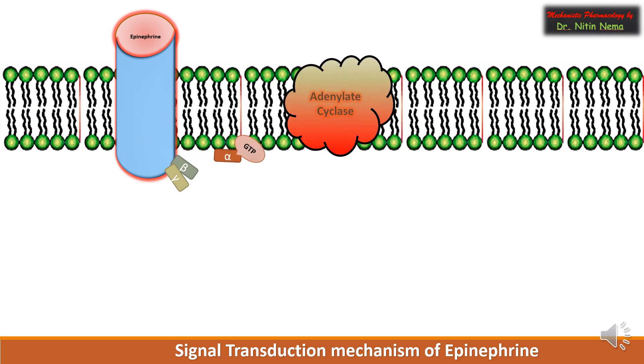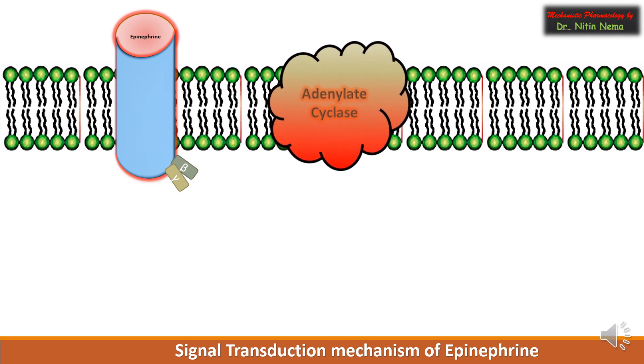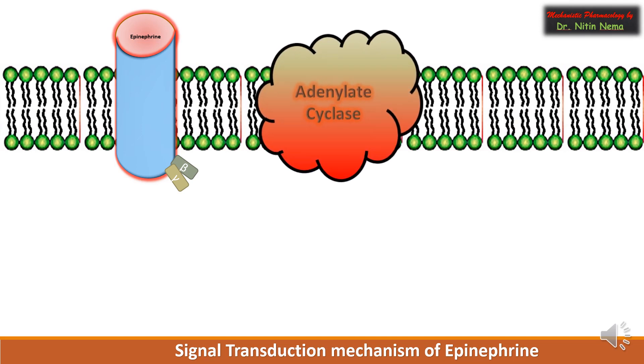Here alpha-GTP dissociates and activates the membrane bound enzyme adenylate cyclase and subsequently releases the beta-gamma subunit from the receptor.